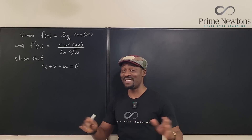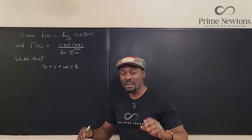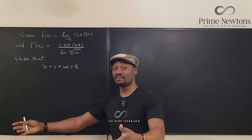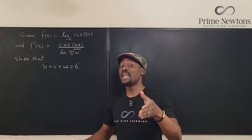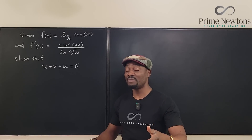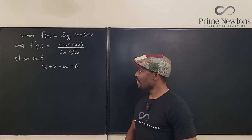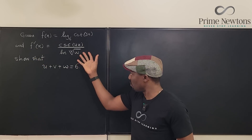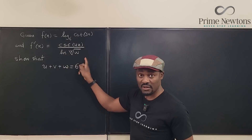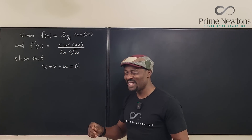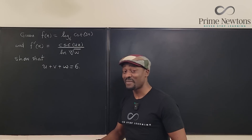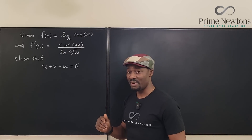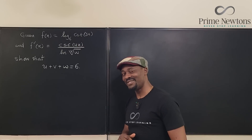Now this looks very abstract, but whenever you have a function you know that you're going to get a derivative of the function if the function is differentiable. So this is on the assumption that it is differentiable, then we're supposed to get numbers that look like this. As long as you know how to differentiate this, there's nothing to worry about. Let's get into the video.